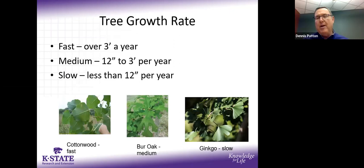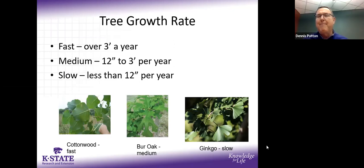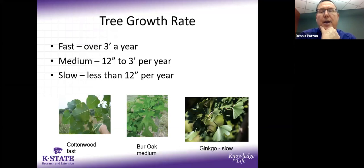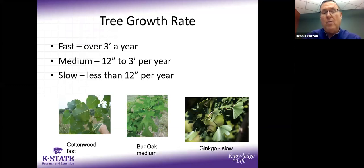Everyone wants a fast-growing tree. As a rule of thumb, fast-growing trees put on about three feet per year, medium trees one to three feet, and slow-growing trees a foot or less. The drawback of fast-growing trees — like cottonwoods — is they tend to be weak-wooded and don't stand up well to wind, ice, and snowstorms. Slower-growing trees tend to have harder, denser wood that's more storm resistant.